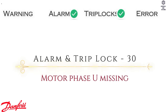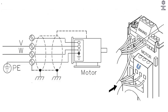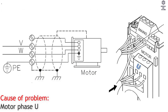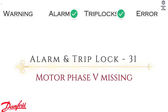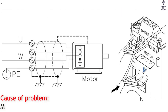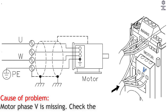Alarm and Trip Lock 30: Motor Phase U Missing. Cause of Problem — motor phase U is missing. Check the phase. Alarm and Trip Lock 31: Motor Phase V Missing. Cause of Problem — motor phase V is missing. Check the phase.